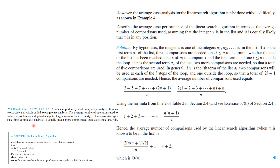Another important type of complexity analysis, besides the worst case, is called the average case. The average number can be complicated, but we'll calculate it for the linear search algorithm. The problem is: describe the average case performance of the linear search algorithm in terms of average number of comparisons, assuming the integer x is in the list and equally likely to be in any position.